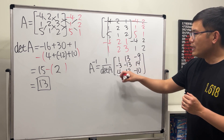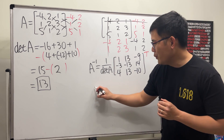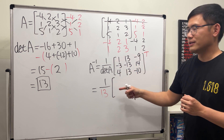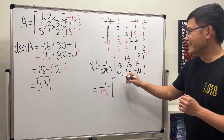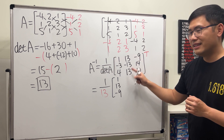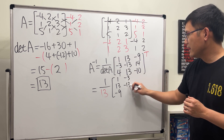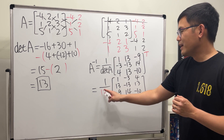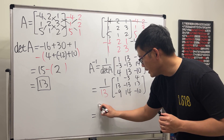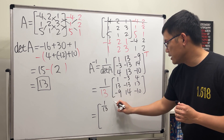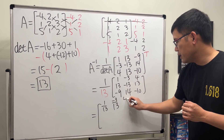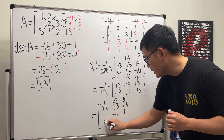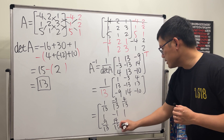After we have the cofactor matrix we still have to do the transpose. So we get 1 over the determinant of A, which is 13. For the transpose, you put each row as a column: so you get 1, 13, and negative 9, then negative 3, negative 13, and 14, then 4, 13, and negative 10. Lastly, distribute the 1 over 13 to all entries: 1/13, negative 3/13, 4/13, 1, negative 1, 1, negative 9/13, 14/13, negative 10/13.